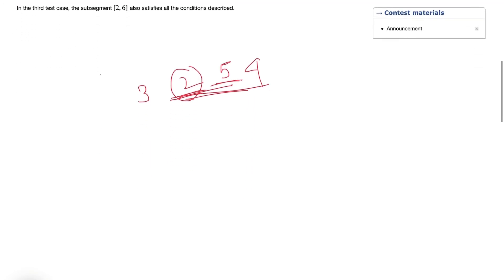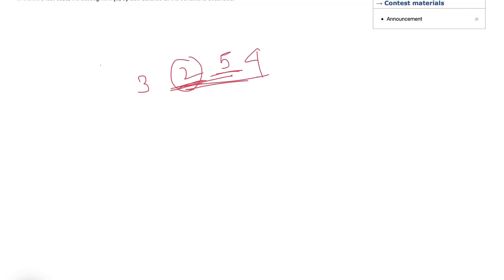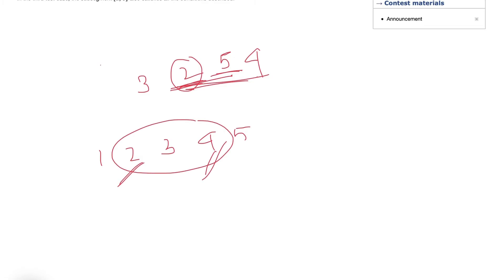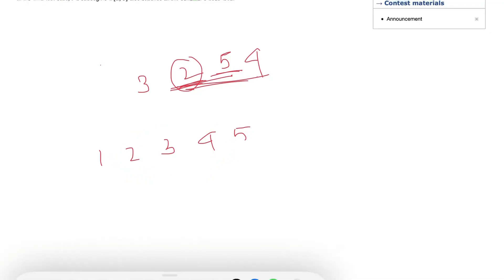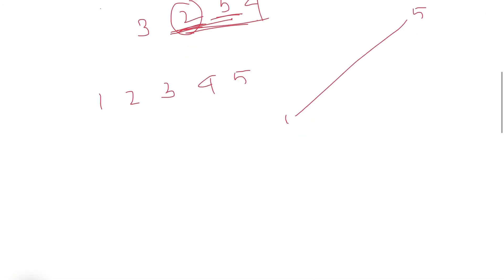If we have an increasing array like 1, 2, 3, 4, 5, it is not possible because whichever sub-segment we take — say 2, 3, 4 — the smallest value is at the left end and the largest at the right end. We can graphically represent this as a rising line. Similarly, for a decreasing array, we won't be able to find any valid sub-segment either.